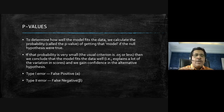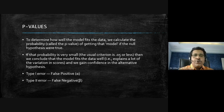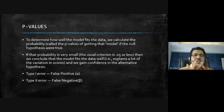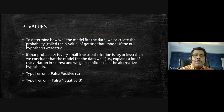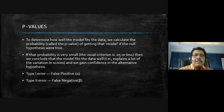We start with the null hypothesis — the conjecture that there is no effect between variables. If the probability of the null hypothesis is less than 5% (alpha = 0.05), we reject it and have more reason to accept the alternate hypothesis, which is essentially our research hypothesis.